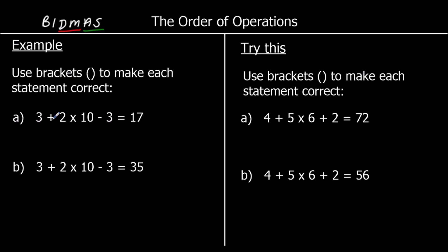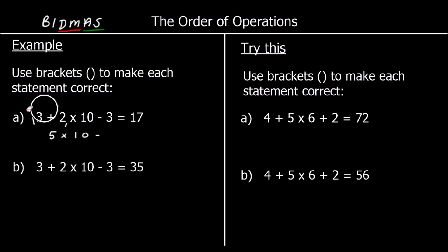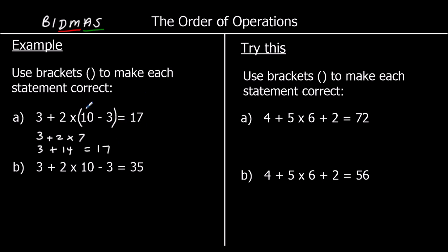So if we add brackets we can change the order. Let's try brackets around 3 plus 2 — that would mean 3 plus 2 is the first thing we do. So 3 plus 2 is 5, that would be 5 times 10 minus 3. We do multiplication before subtraction, so that would be 50 take away 3, and that is not 17. So we don't want the brackets there. How about around 10 minus 3? Brackets come first, so this would become 3 plus 2 times (10 minus 3), which is 7. Then we do multiplication: 2 times 7 is 14. So 3 plus 14 is 17 — that is the correct position for the brackets.